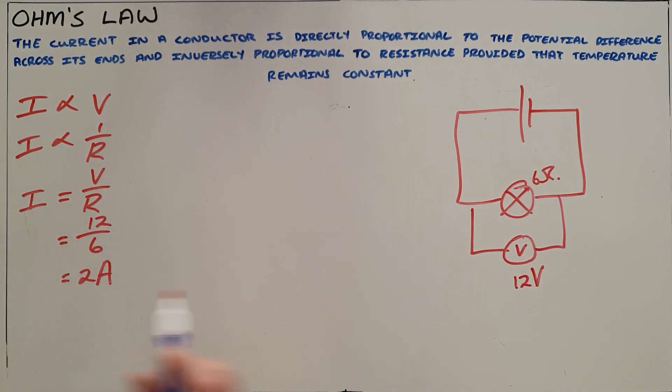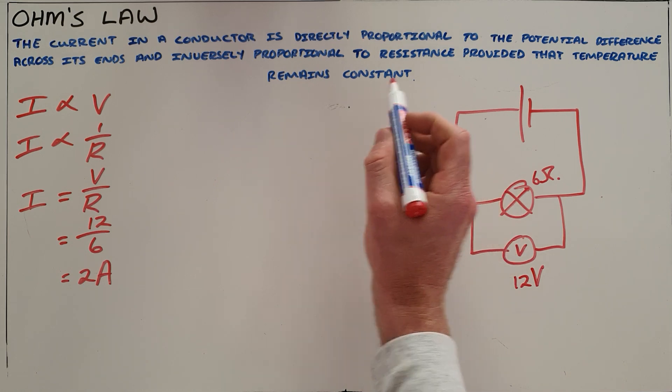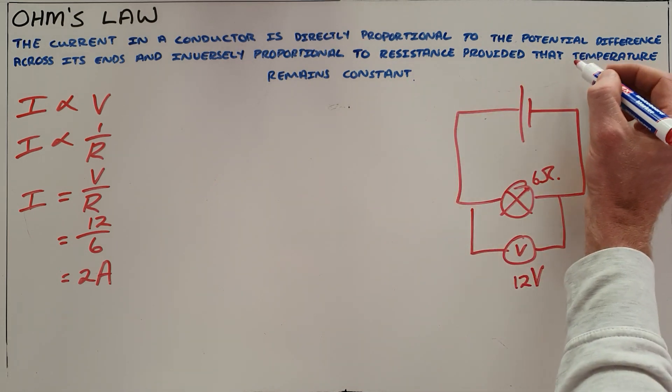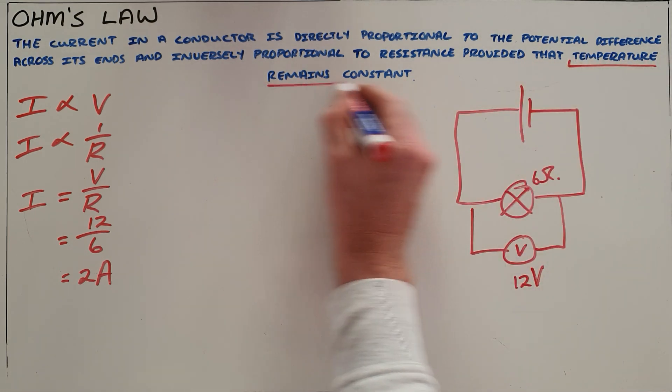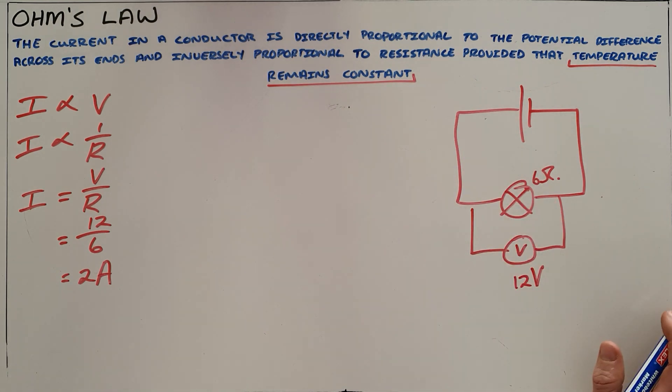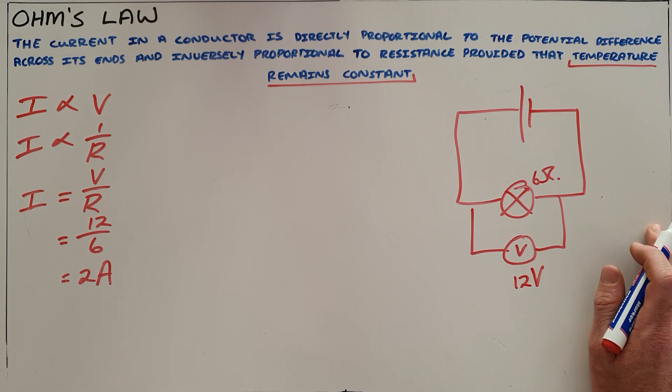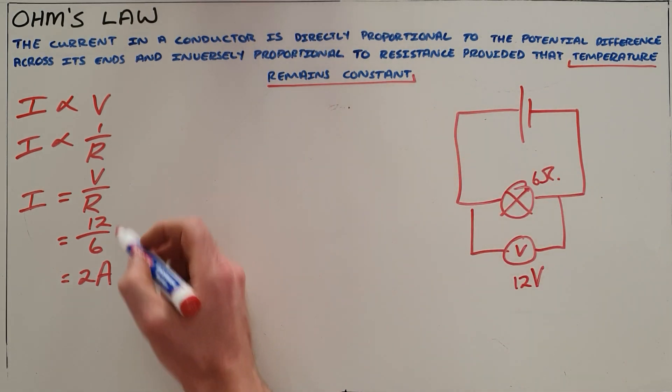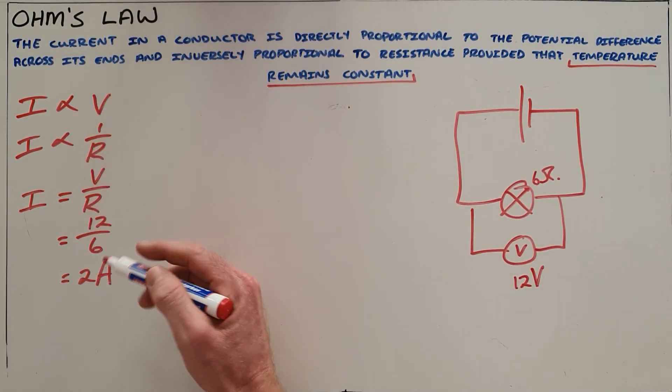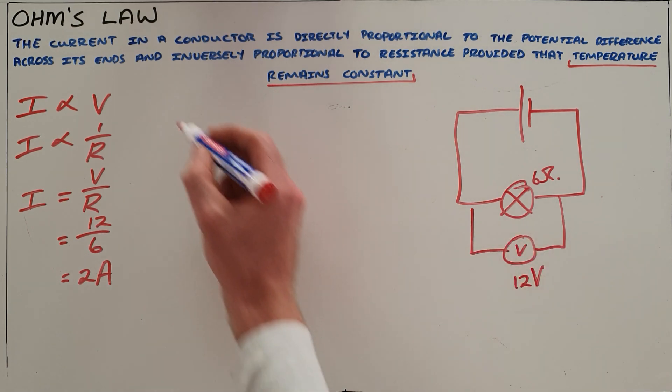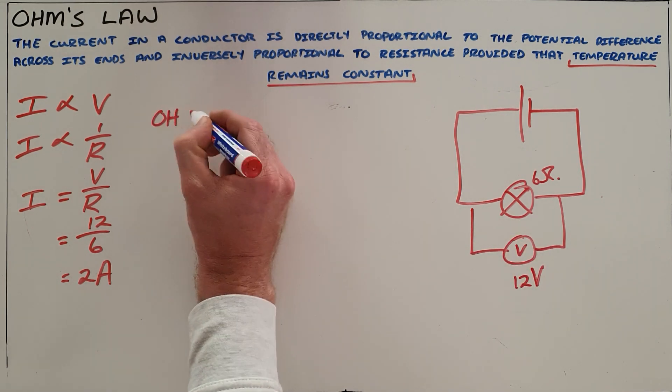Obviously this only applies when temperature remains constant, because we know that temperature is one of the factors that affects the resistance in a circuit. So if the temperature did not remain constant, we know that the resistance would not remain constant and this formula would not apply. But we are always dealing with ohmic conductors.